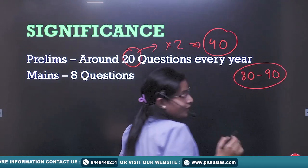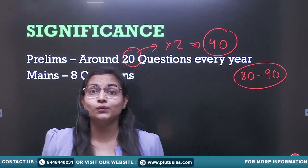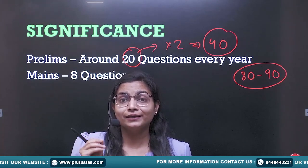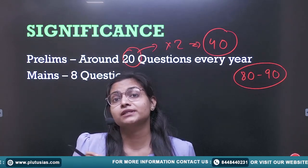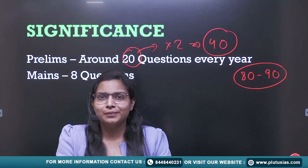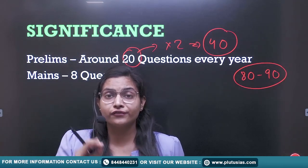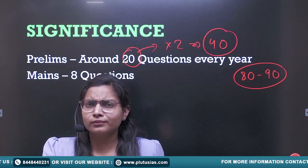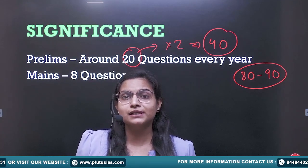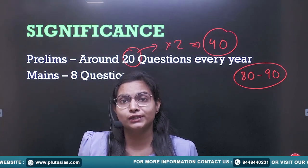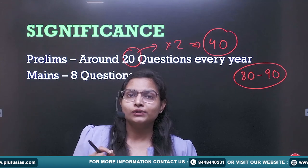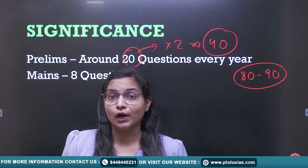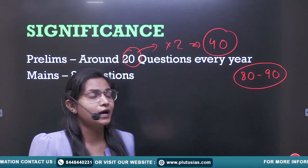If you were lucky enough to solve all the economy questions correctly, you are able to clear 50% of the prelims cut-off. If you have read the economy subject well, you should be able to comfortably solve around 15 to 16 questions correctly. So 50% of the cut-off can be cleared from the economy subject alone. Then comes the mains.